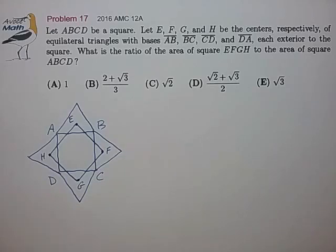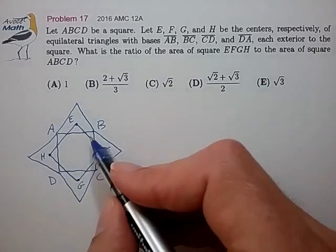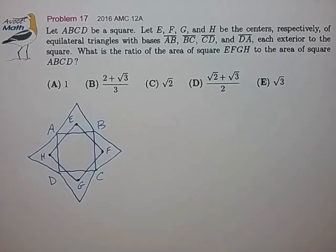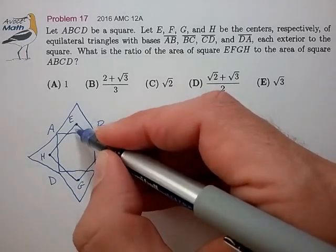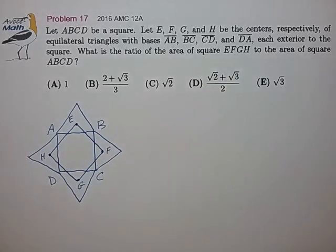A second way is to try to work out the ratio of the diagonals of the two squares, and that seems a bit easier because I see a way to find the diagonal EG pretty easily now. So let's go that route.